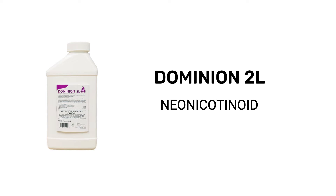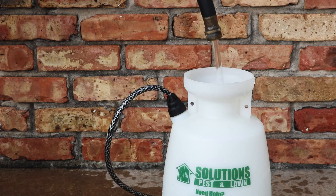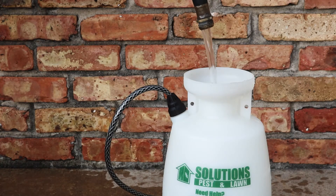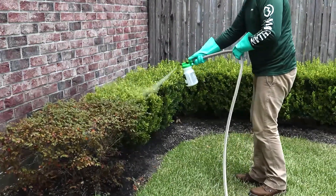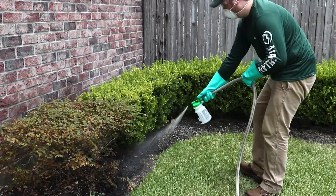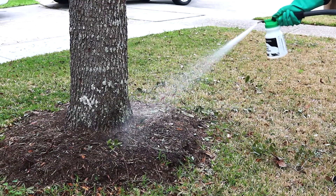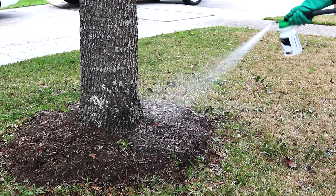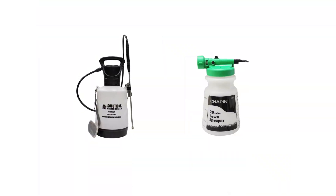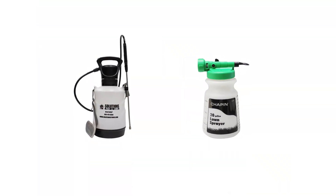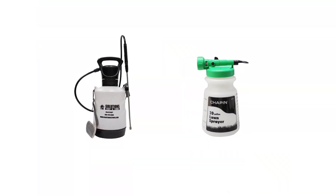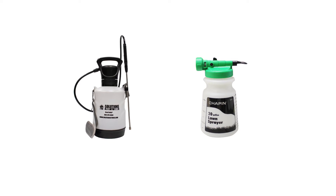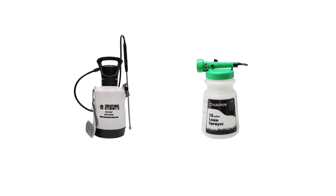To treat sawfly larvae, you'll need to use a systemic insecticide like Dominion 2L. Dominion 2L is a neonicotinoid that contains imidacloprid and will need to be mixed with water before application. This product can be applied either as a foliar treatment or as a soil drench. To treat sawfly larvae, we recommend using a handheld pump sprayer for low-volume applications or a hose-end sprayer for high-volume applications.